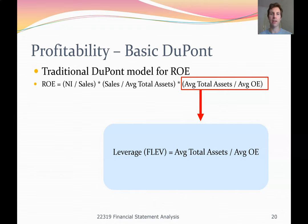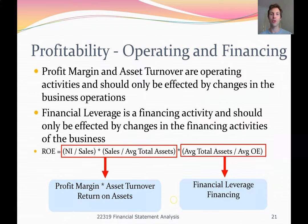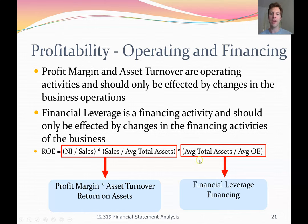Profit margin and asset turnover are closely linked to the business's strategy. On the financing side, how much debt we have gives us our financial leverage. Profit margin times asset turnover — crossing out the sales terms — gives us net income over average total assets, also called return on assets, which measures operating performance. Profit margin and asset turnover should only be affected by changes in business operations, while financial leverage should only be affected by financing activities. But as I step through some examples, we'll see that's not always the case.